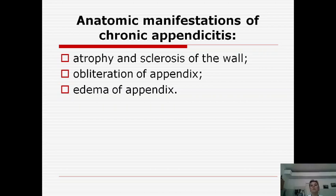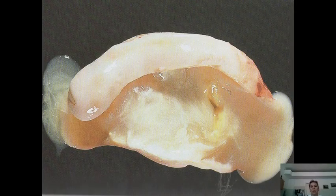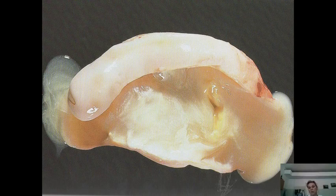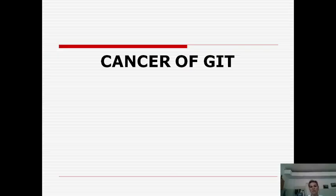Regarding chronic appendicitis, the anatomical manifestations include atrophy and sclerosis of the wall of the appendix, obliteration of the lumen of the appendix, and edema of the appendix. In this photo you can see the anatomical picture of chronic appendicitis including the edema.